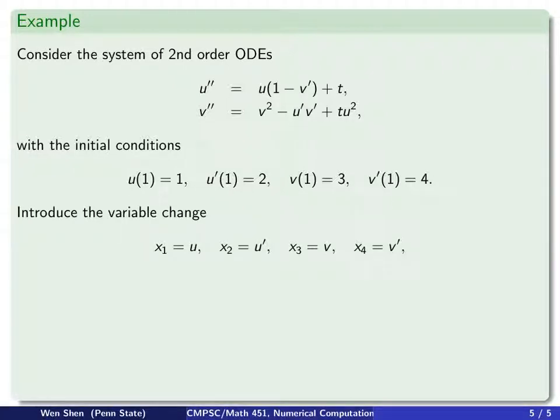Let's introduce this systematic way of variable change. First, take care of u. For u, I will need two unknowns because it's second-order. I call x1 is u, and I call x2 is u prime. That shall be enough for u. Then look at the equation for v, which is second-order. I will need two unknowns again. x3 will be v, and x4 will be v prime.